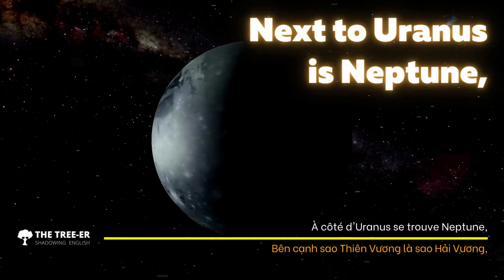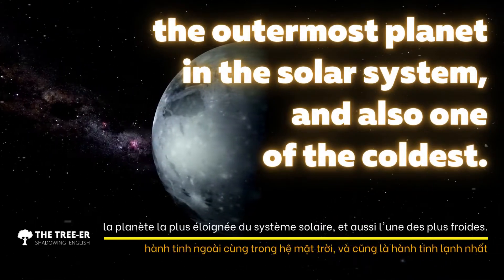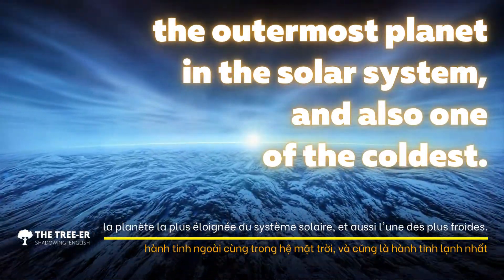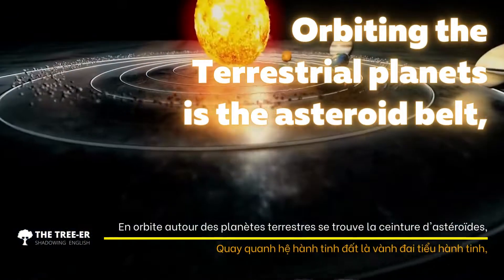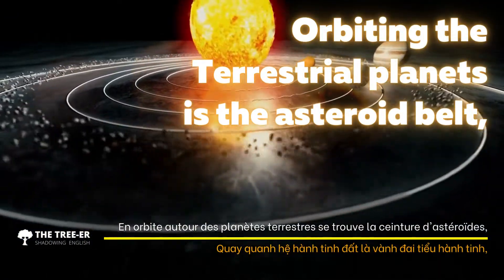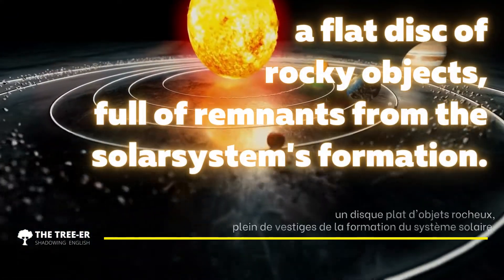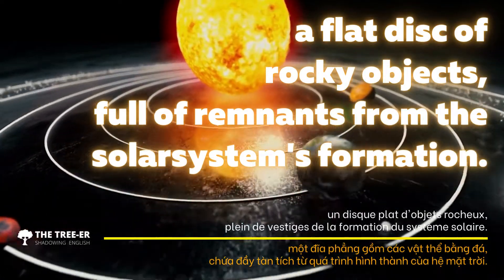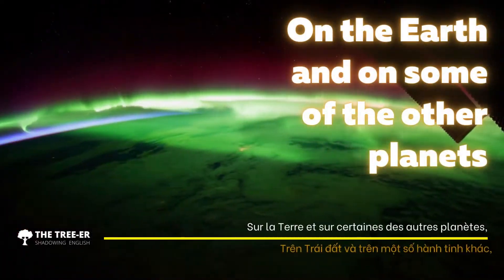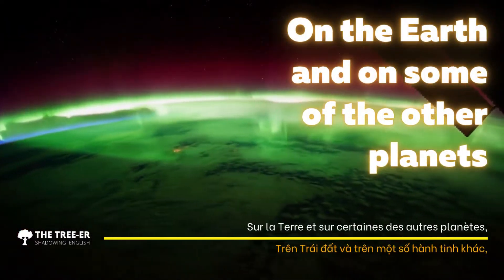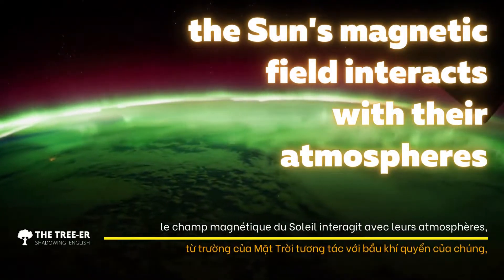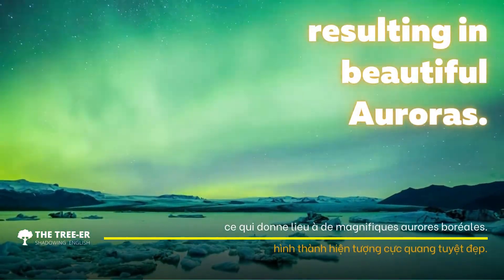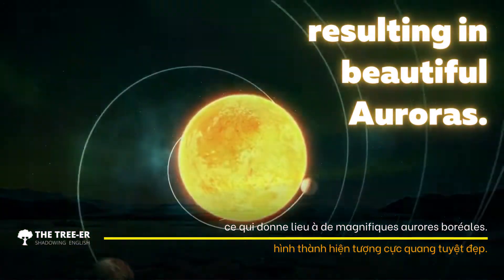Next to Uranus is Neptune, the outermost planet in the solar system and also one of the coldest. Orbiting between the terrestrial and Jovian planets is the asteroid belt, a flat disk of rocky objects full of remnants from the solar system's formation. On Earth and on some other planets, the Sun's magnetic field interacts with their atmospheres, resulting in beautiful auroras.